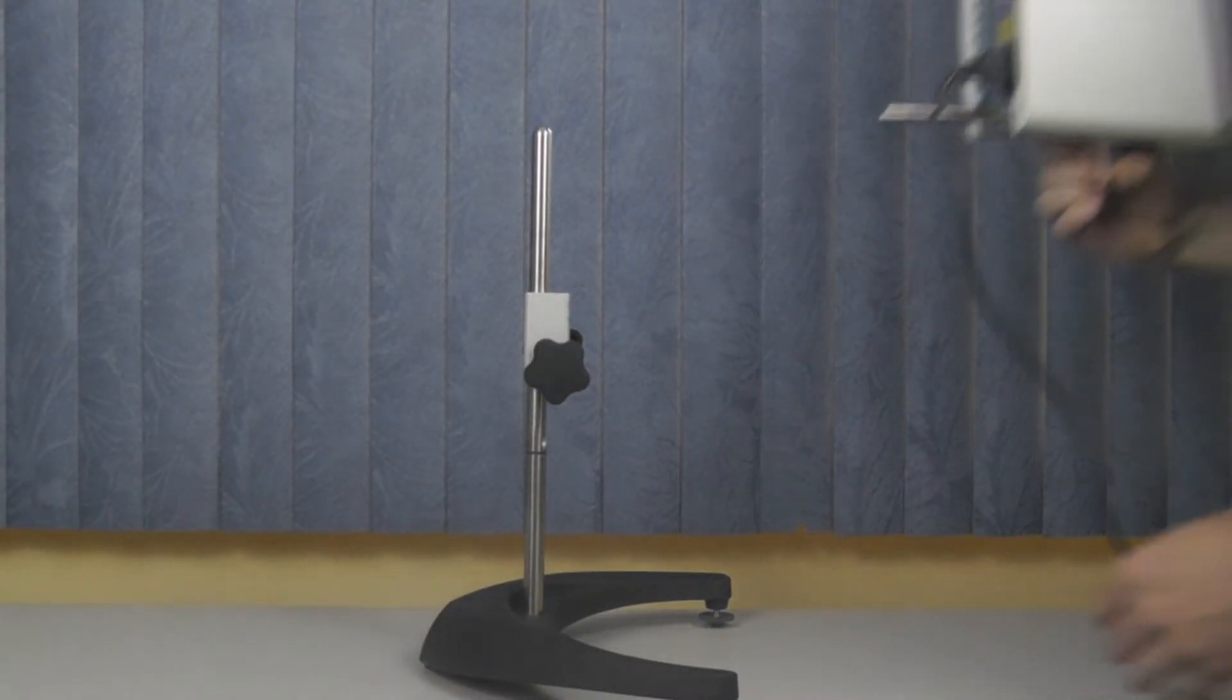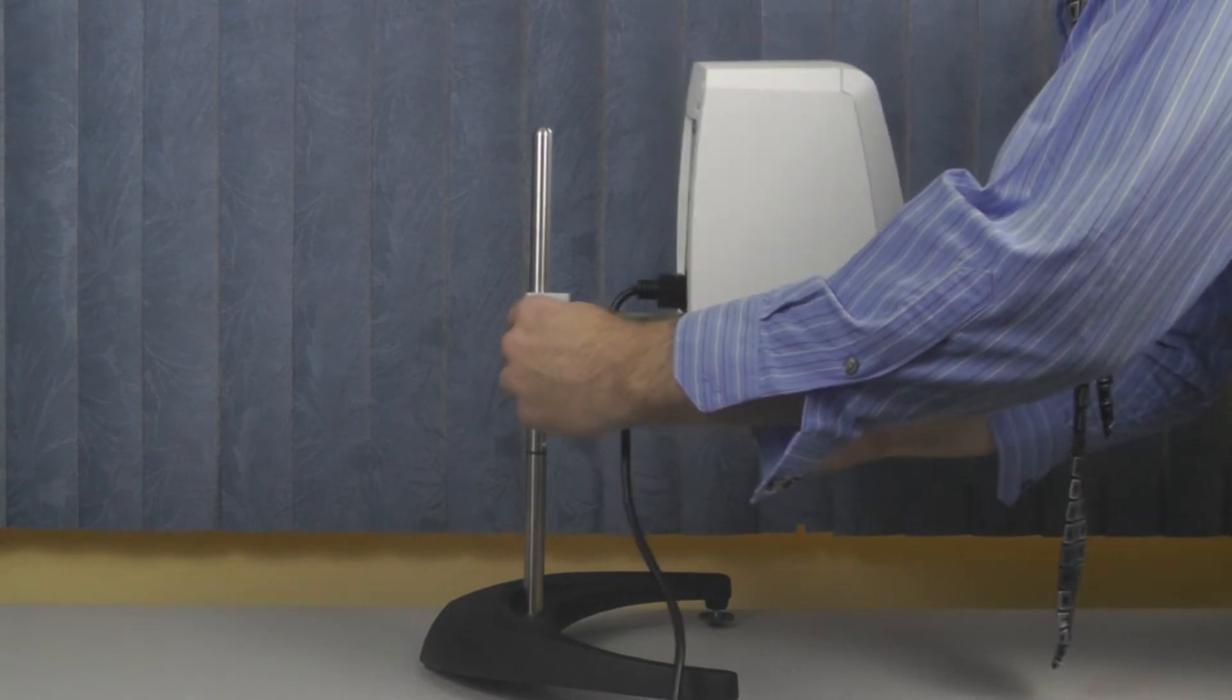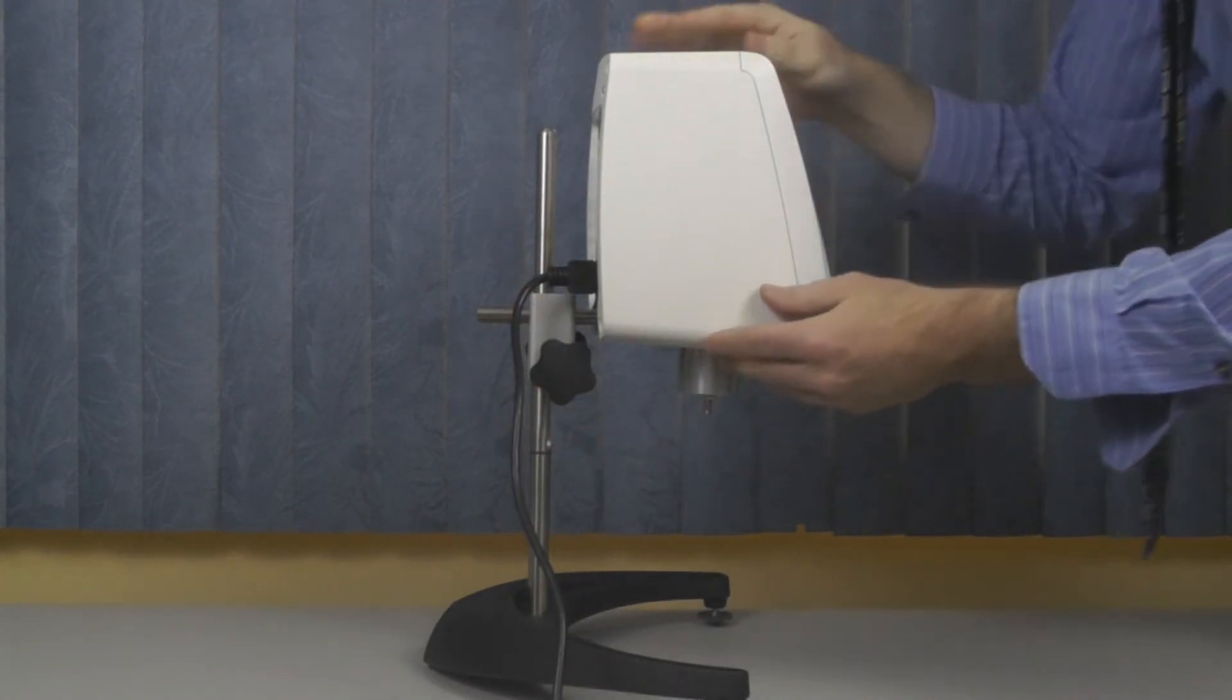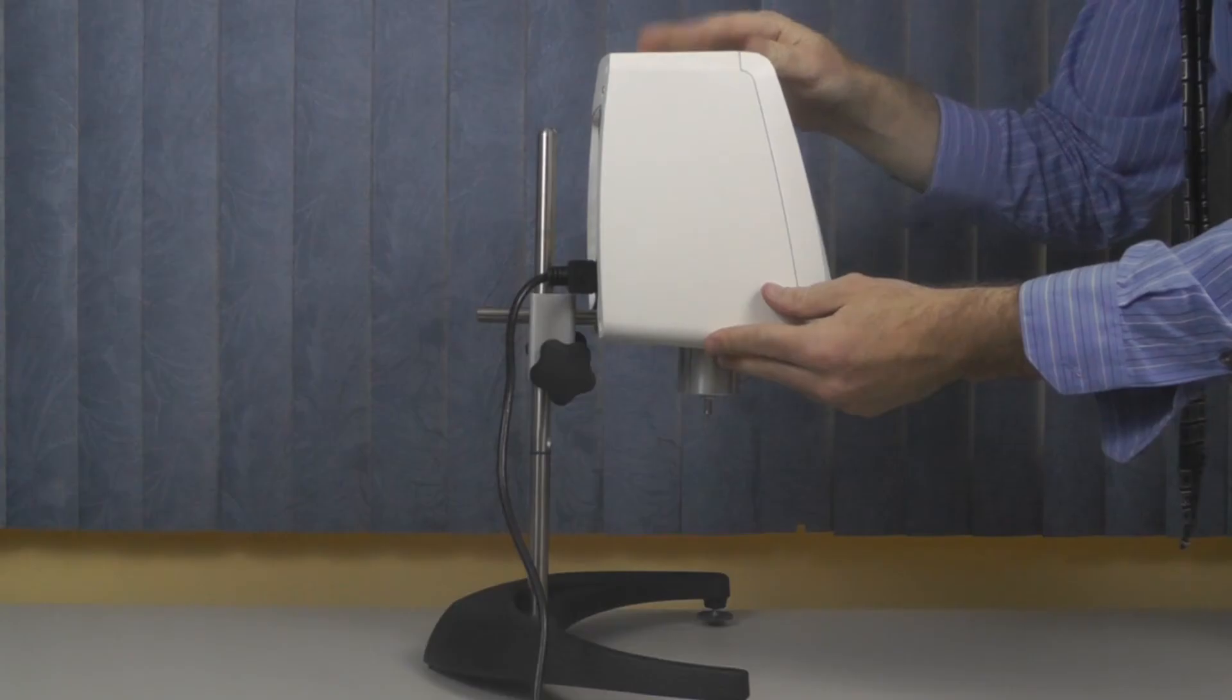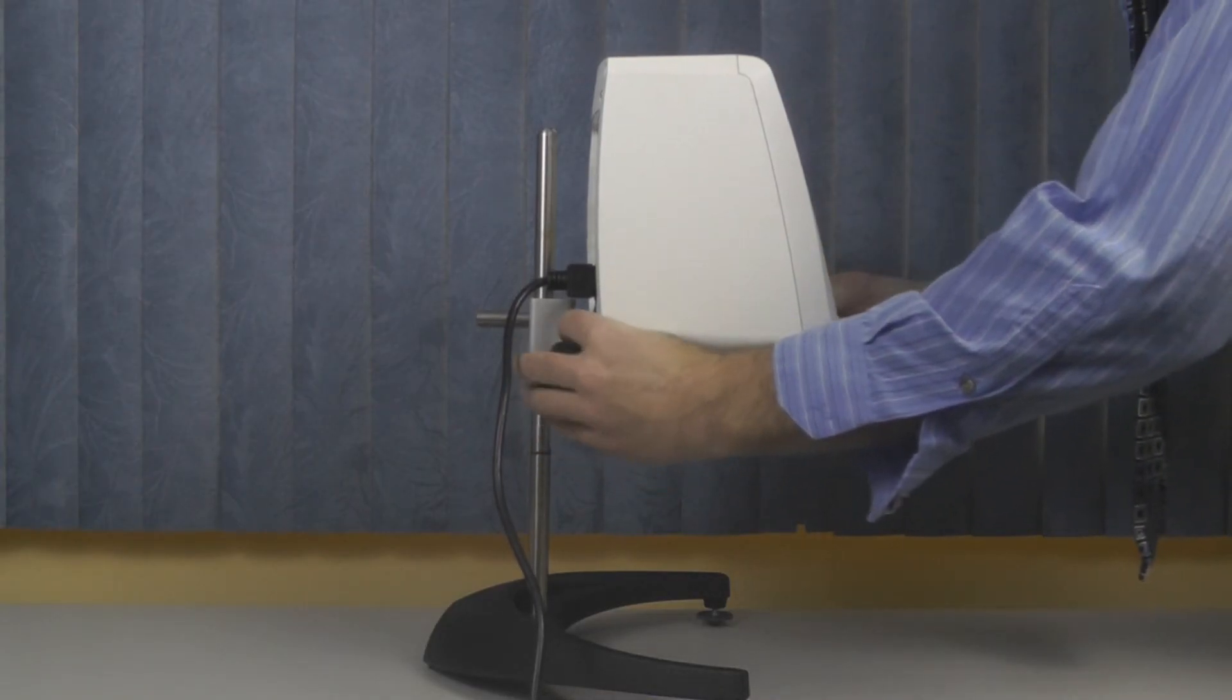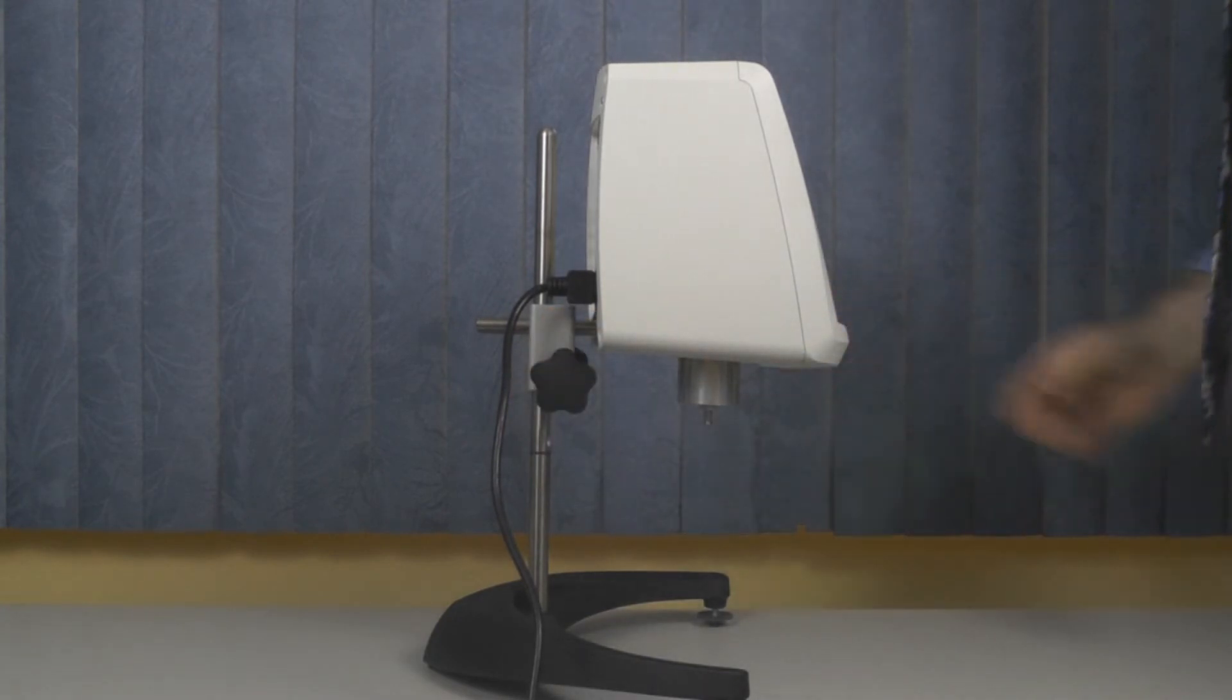You begin the leveling process when you first attach the viscometer to the universal clamp assembly. Once you insert the mounting rod into the clamp, you can change the angle of the instrument so the bubble in the bubble level is close to the black circle. Once it is close, tighten the clamp assembly so the instrument is in a fixed position.